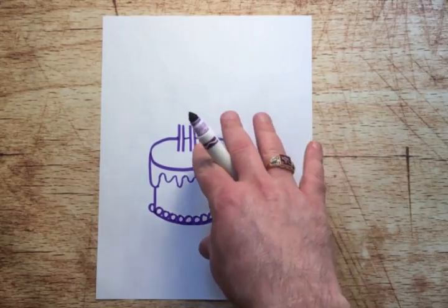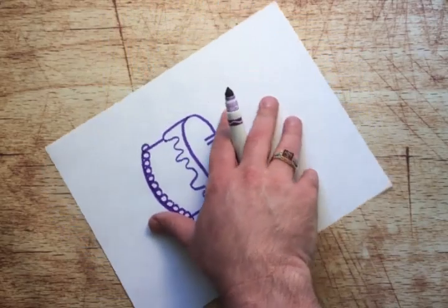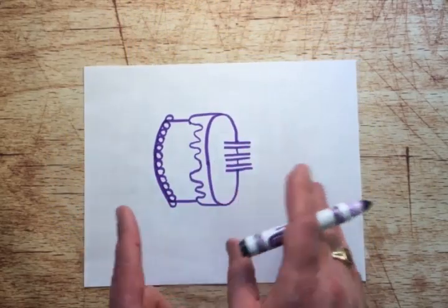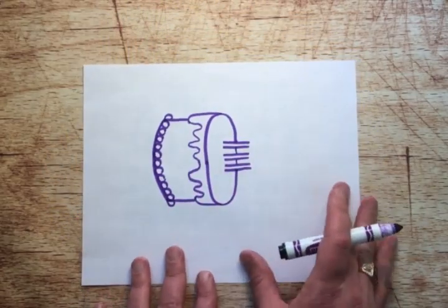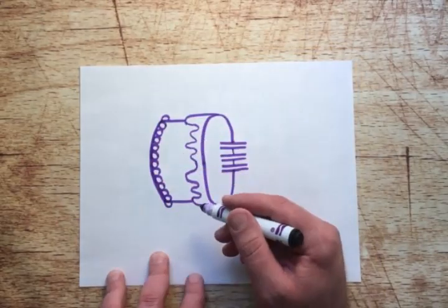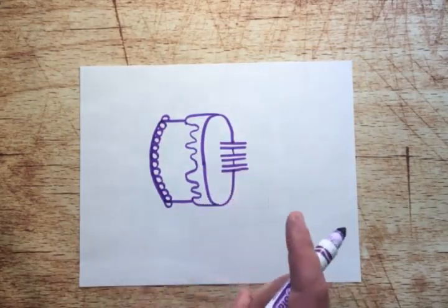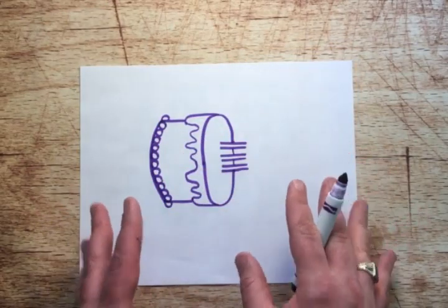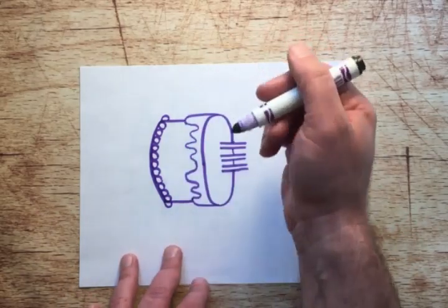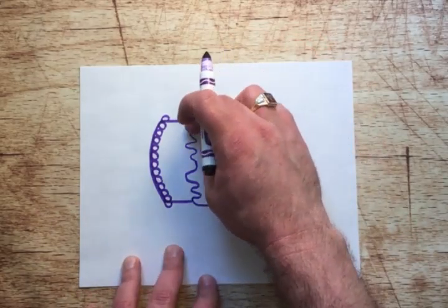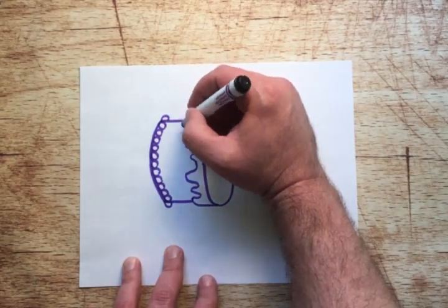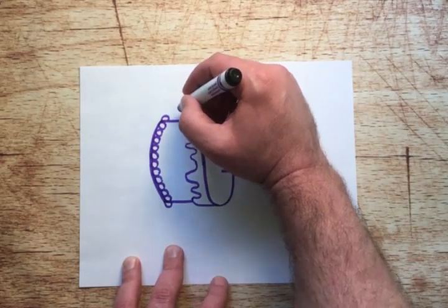You're going to take your paper now, you're going to turn it back around like it was before, like a window. We're going to make a plate for this cake to be on, and we're going to make another C just like we did before, only a little bit bigger. Just here below where your frosting line is, we're going to come over here and make that capital C.